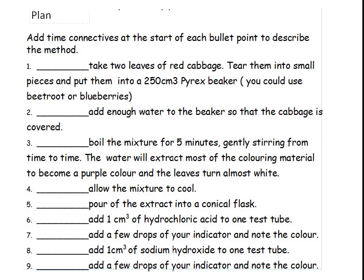Next, you've got a method or plan for making and testing the red cabbage indicator. What I need you to do is pause the video and fill in time connectives at the start of each sentence. For example, for the first step I put 'firstly' — take two leaves of red cabbage. So pause the video and fill in your own time connectives for all of these steps.